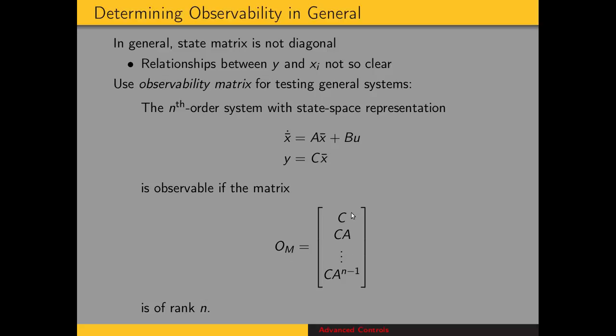Which is defined as C, C times A, all the way down to C times A to the n minus 1 power. If that matrix is of rank n, then the system is observable. So if this matrix is full rank, then this is an observable state-space representation.